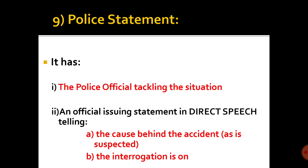The ninth point is very important: the police statement. If it's a crime site, a suspected sabotage, a terrorist act, a bomb blast, a train accident, or a fire accident, the police visit the site and interrogate people. The top official will issue a statement and the reporter must approach him for an official statement. The police official will tell the causes behind the accident — the reporter cannot surmise or guess. The police official will say the interrogation is on.